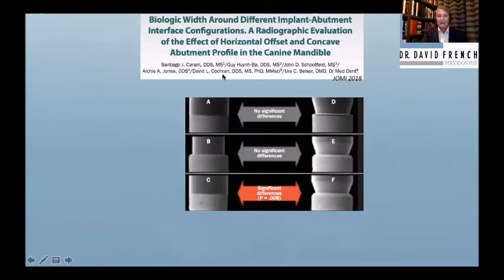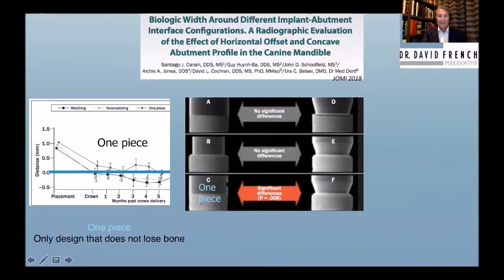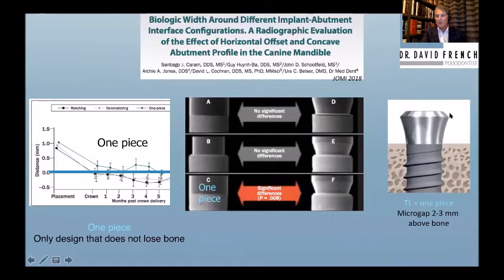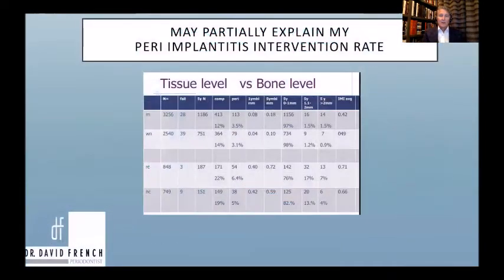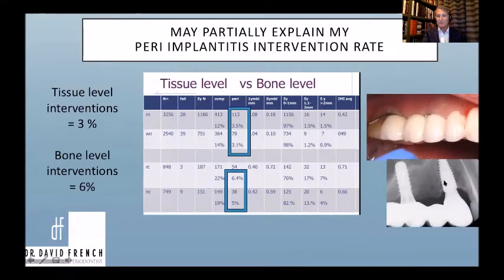No matter what design was examined — again Cochran's group — the only design that doesn't lose bone between placement and stage two is the one-piece design, where there is no gap at the level of the bone. This uses a machined collar so the micro-gap is 2–3 mm away from the bone. That's the only design with no bone loss from placement to prosthesis. My intervention rate was roughly double on bone-level designs, partly due to bacteria being close to the bone, though anterior and grafted cases are a confound in that data.